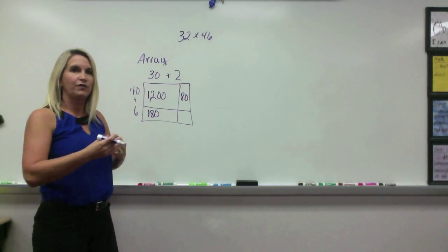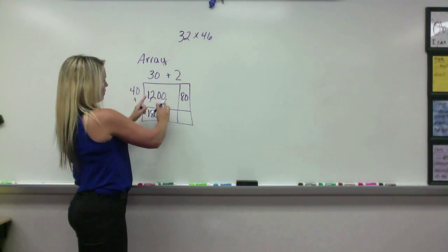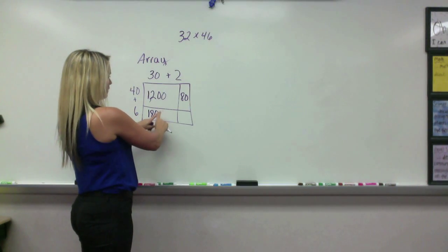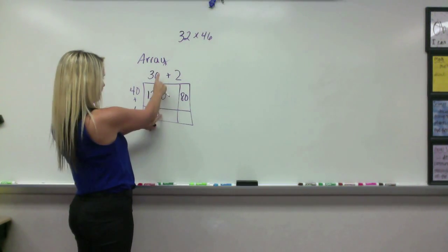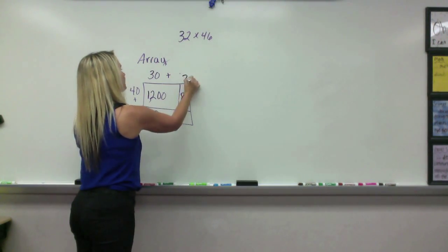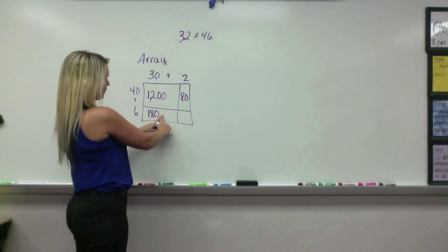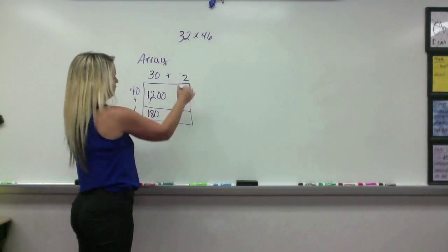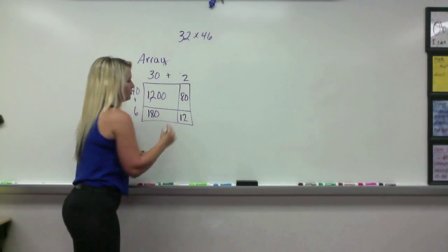If the kids get confused on which numbers to multiply, I always say take your fingers and put them in the box and go one straight up and one straight over. So for this one, we're multiplying 30 and 6, and then for this one, we're going to multiply 2 times 6, which is 12.